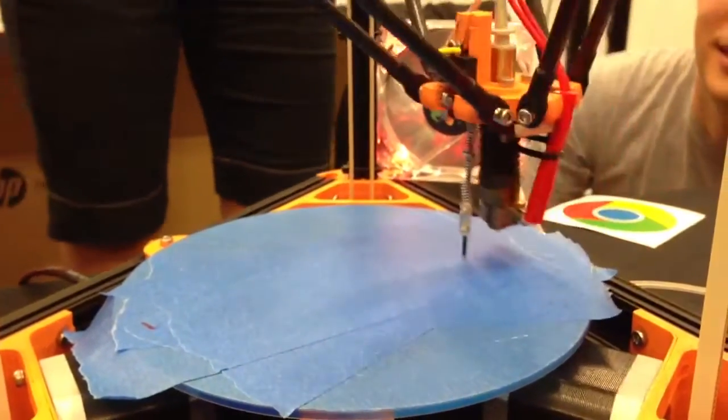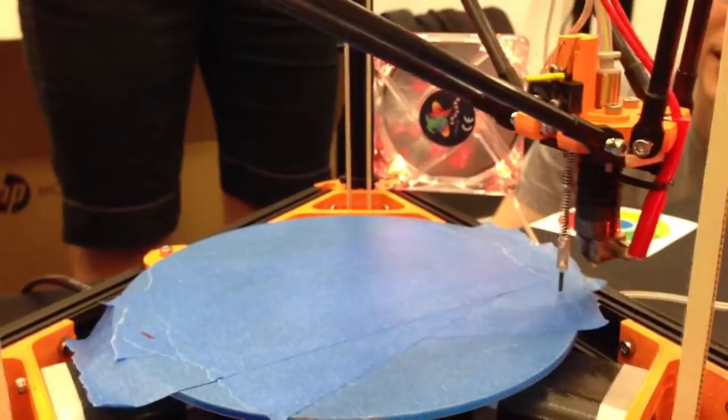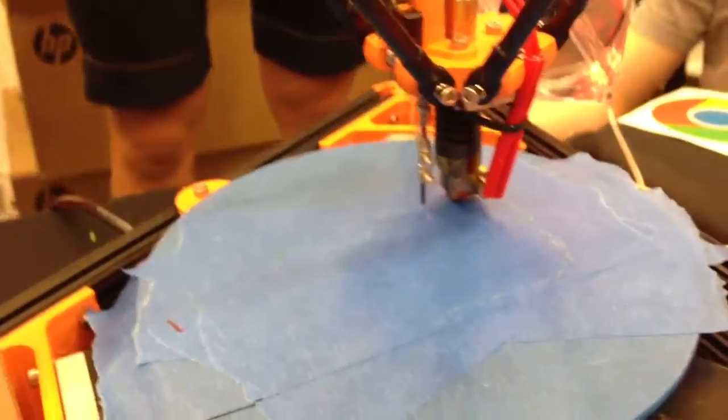While you're printing, it compensates with linear interpolation between those points, so the actual print ends up just the right height in just the right place.